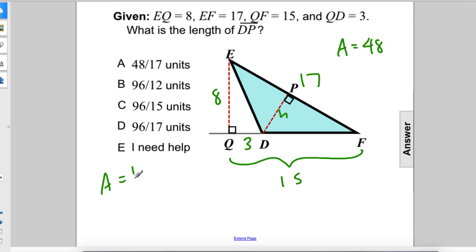So we have area equals 1 half base times height. We know that equals 48. And we have 1 half, the base is 17, and the height is what we're solving for, equal to 48.